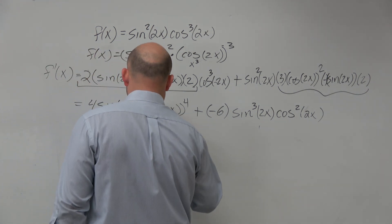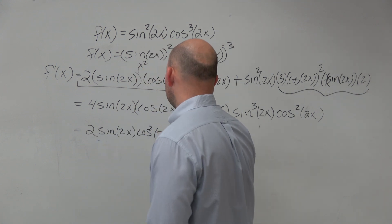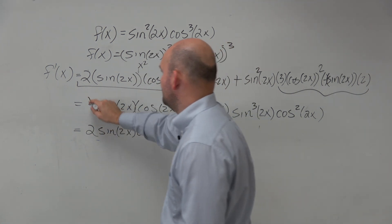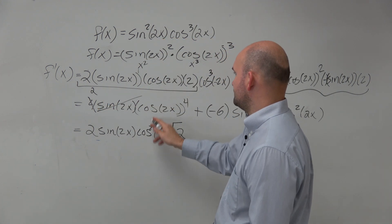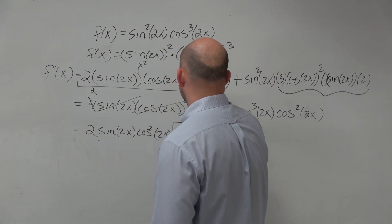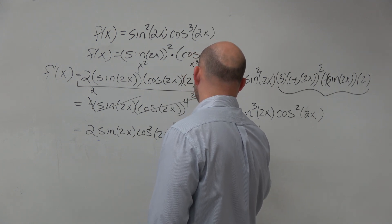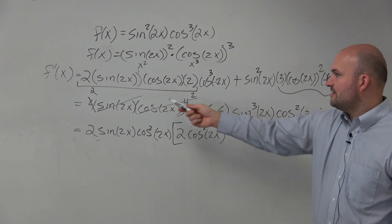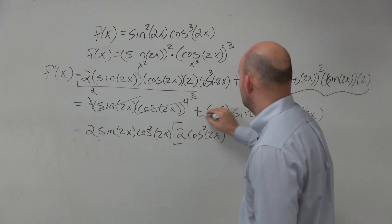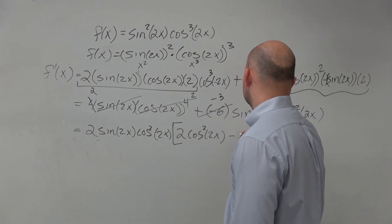So now I'm left with a 2 because when I factor out a 2 there, I'm left with a 2. Sine of 2x, factor that out. When I factor out a cosine squared, that's going to leave me with a 2. So I'll say cosine of 2x squared. When I factor out a 2 out of this, I get a negative 3. So I'll just write minus 3.